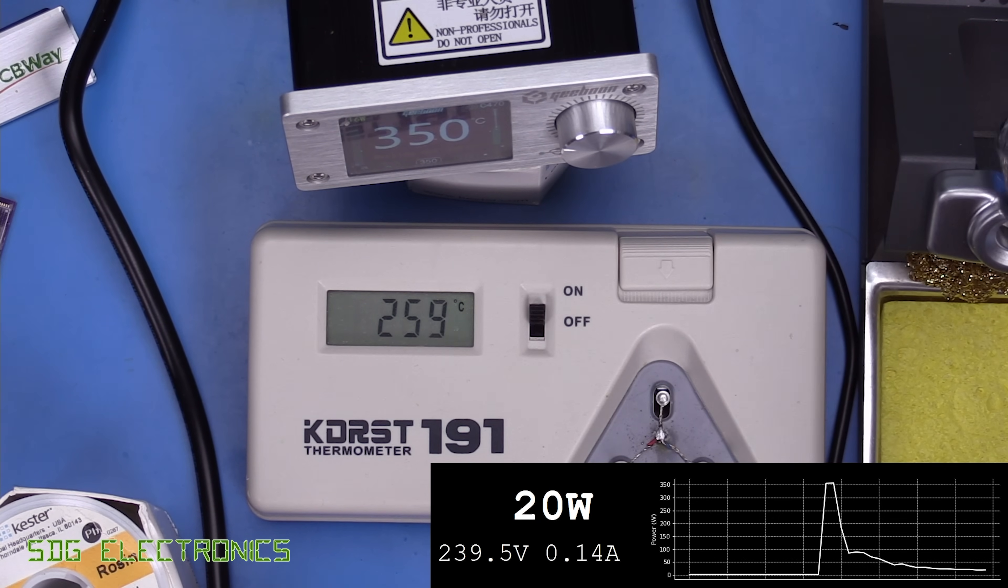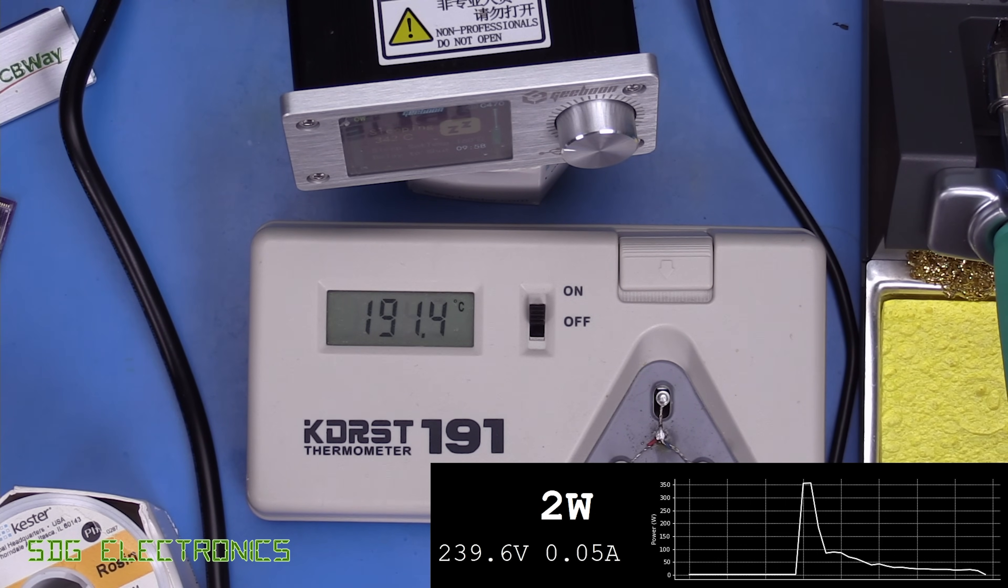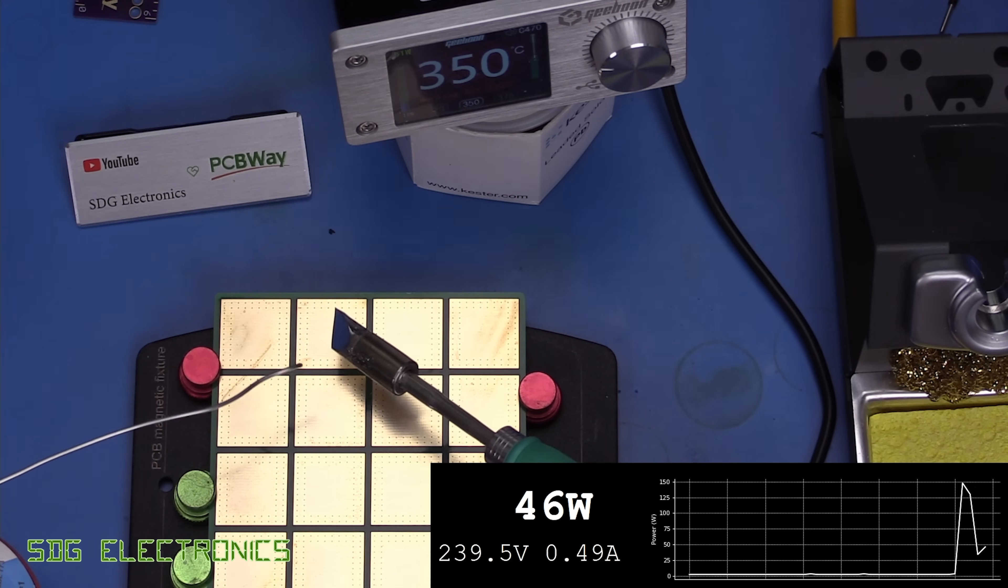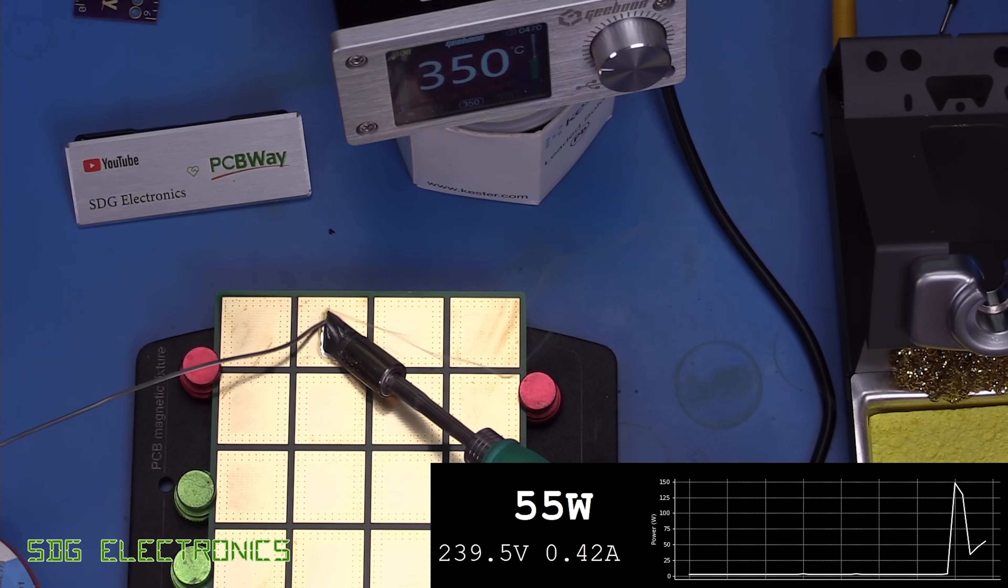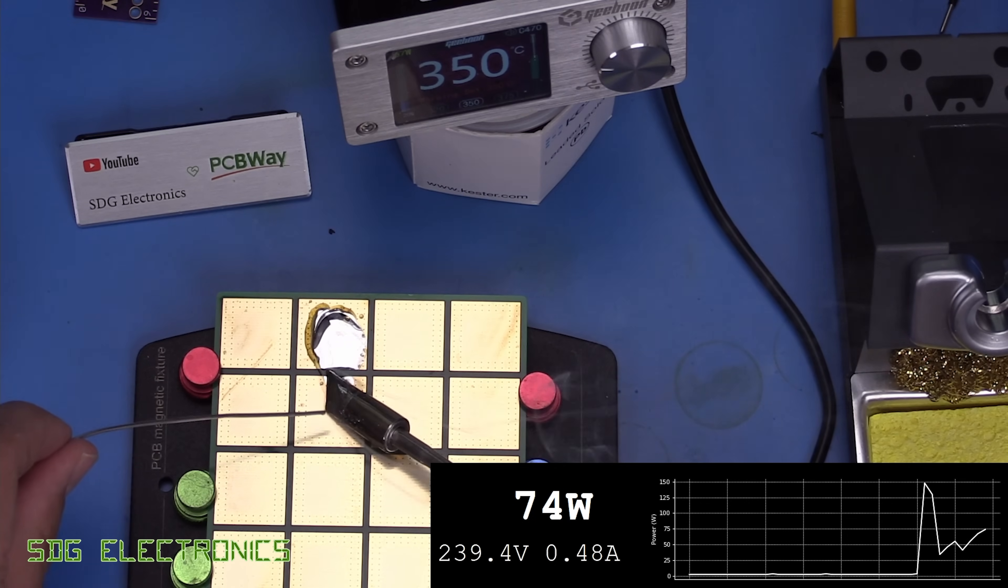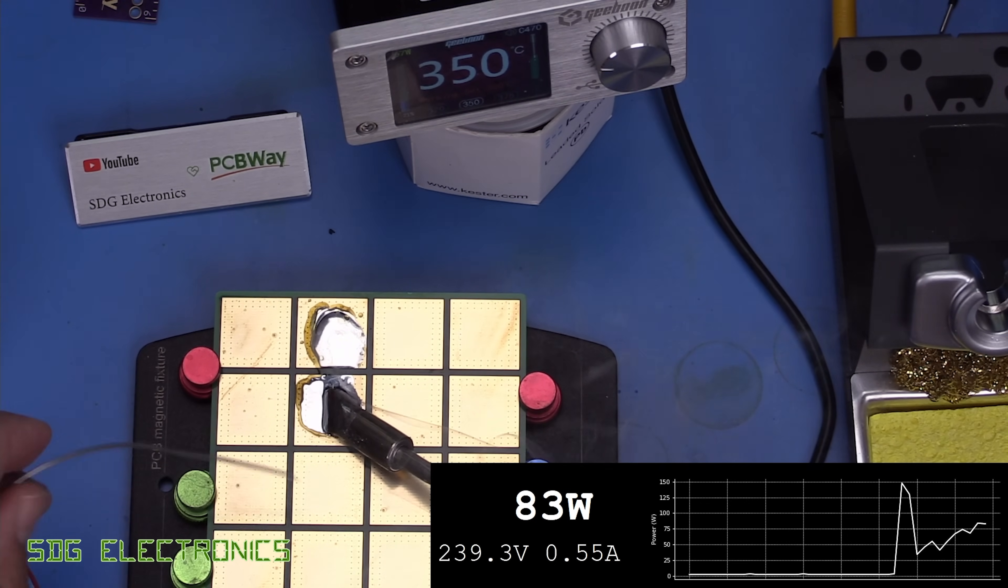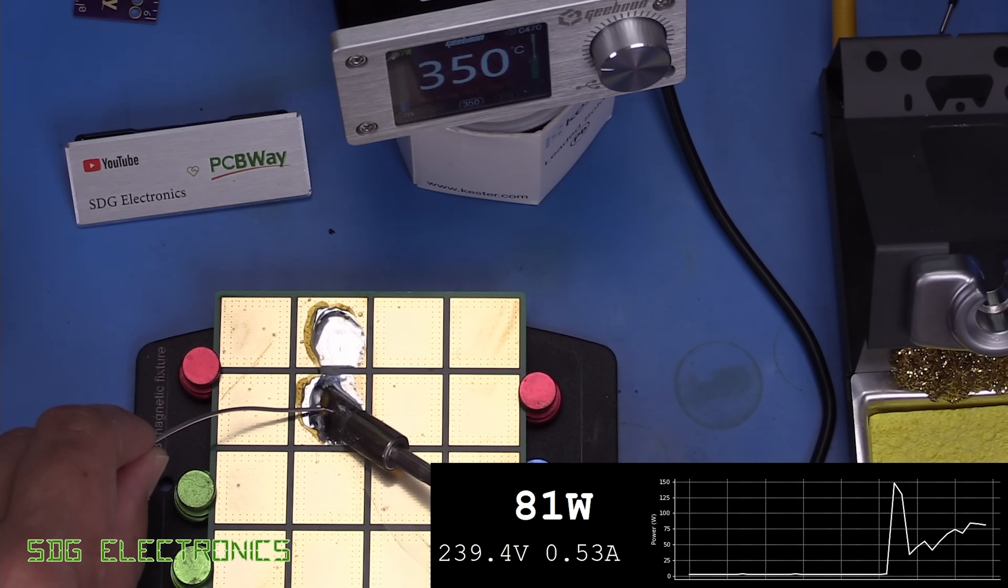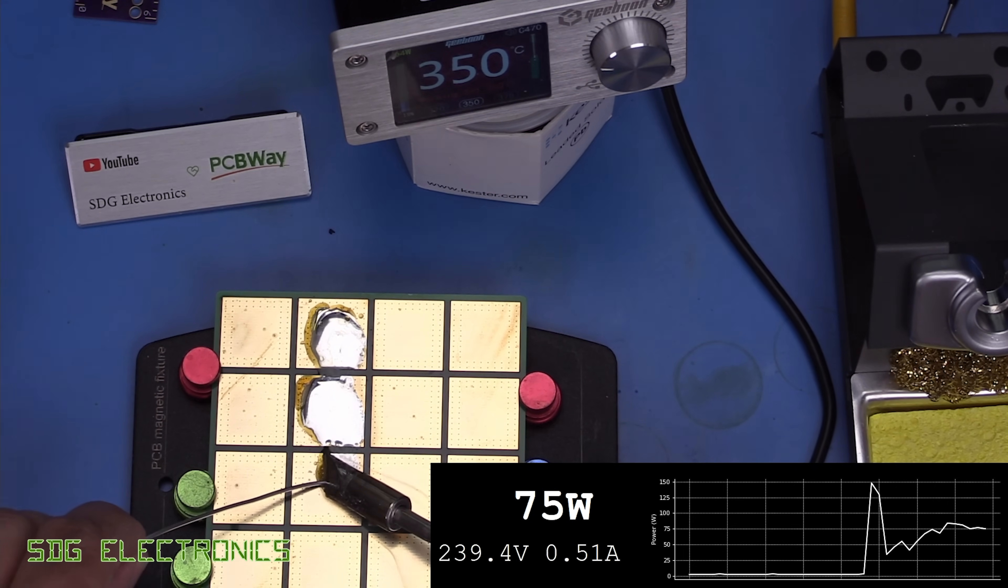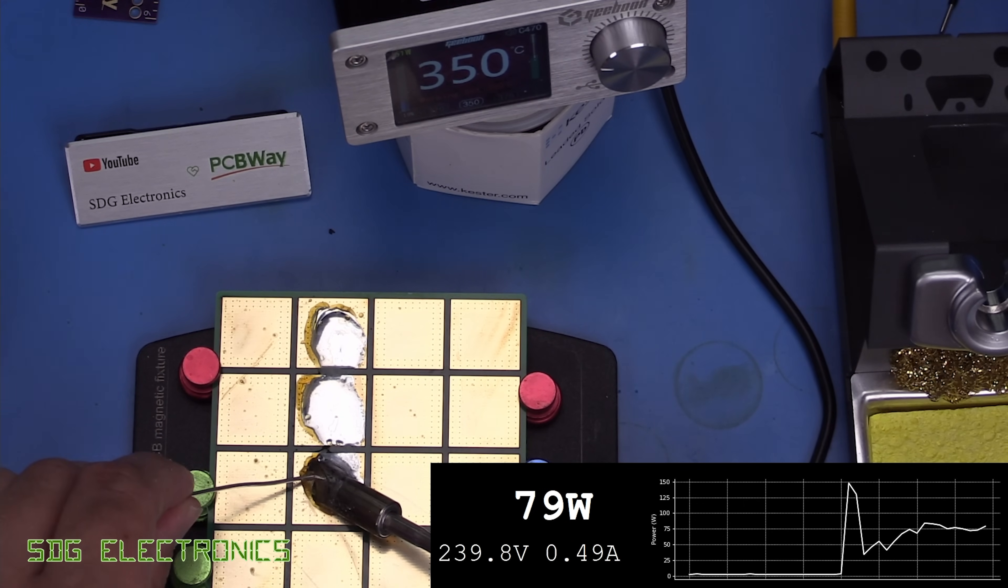That's one of these cartridges here. Let's have a go at seeing what it's like with some power delivery into a PCB. We've got a four-layer PCB here. Let's see what happens.